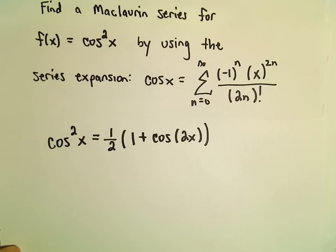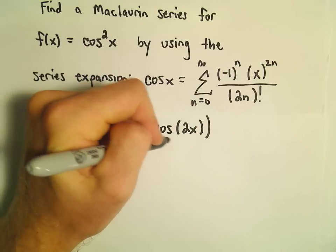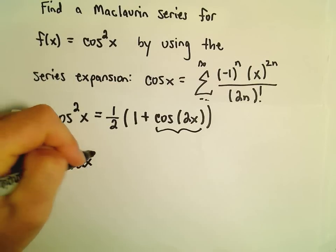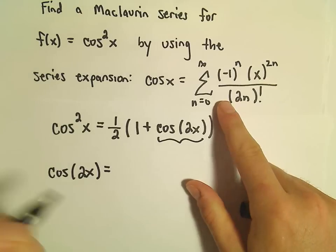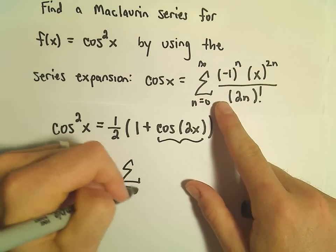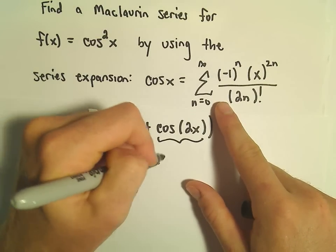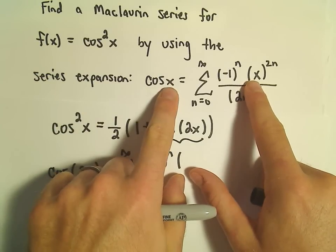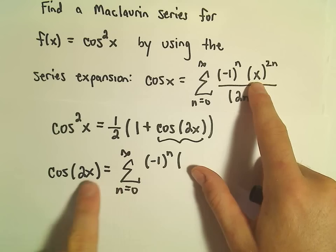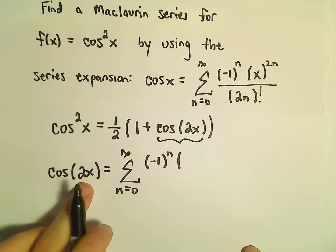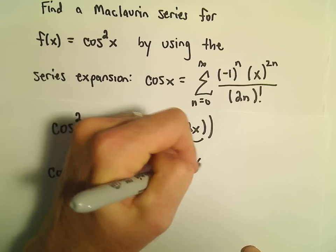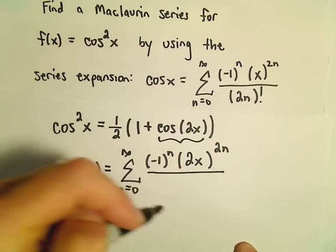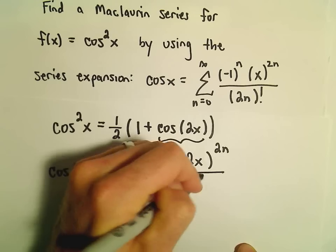The first thing is to find a series expansion for cosine of 2x. Using our known series expansion, cosine of 2x equals the series from n equals 0 to infinity of negative 1 to the n, times 2x raised to the 2n power, all over 2n factorial.